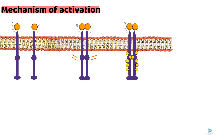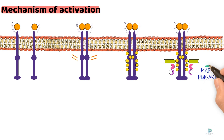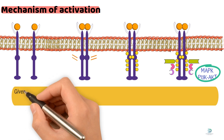This phosphorylation serves as a docking site for signaling proteins, initiating pathways like the MAPK and PI3K-AKT pathways, which are crucial for cell proliferation and survival.